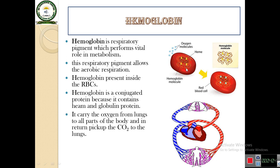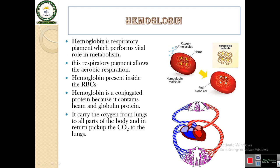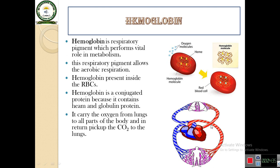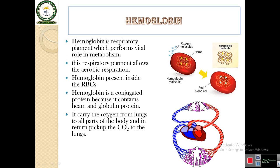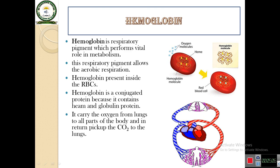Hemoglobin carries oxygen from the lungs to all parts of the body and in return picks up carbon dioxide back to the lungs. In the veins, RBCs are deoxygenated. When they go to the lungs, they lose carbon dioxide and bind with oxygen, becoming reddish in color. When they pass through the capillaries, they release their oxygen and nutrients, pick up carbon dioxide, become bluish in color, and return to the lungs for oxygenation. So hemoglobin is the pigment which carries oxygen and carbon dioxide in return.